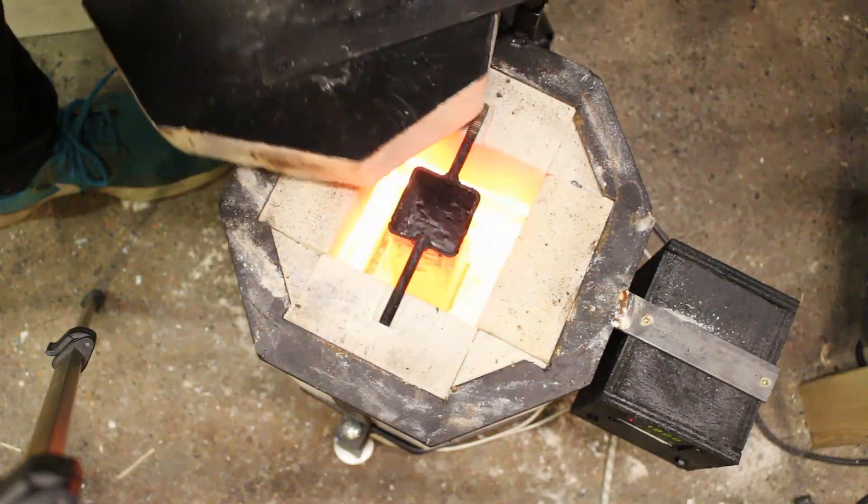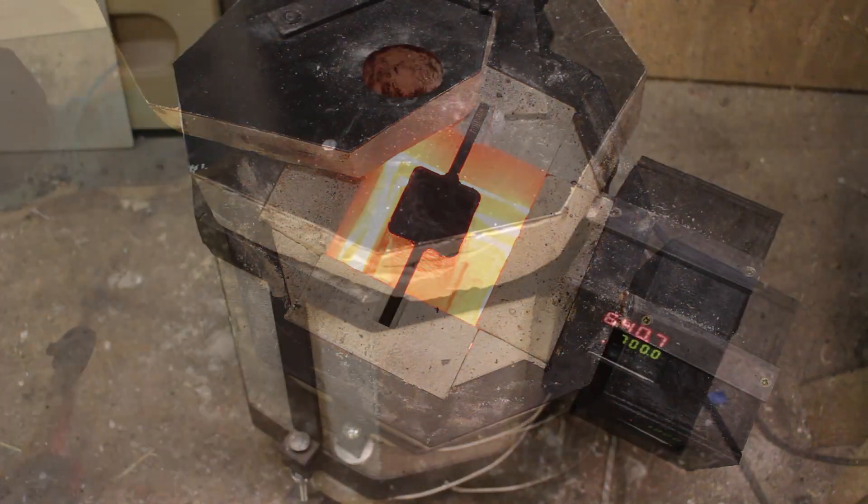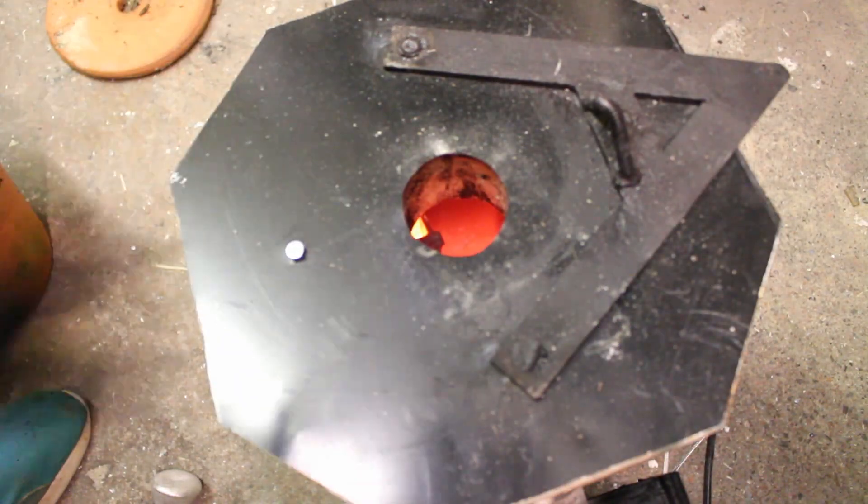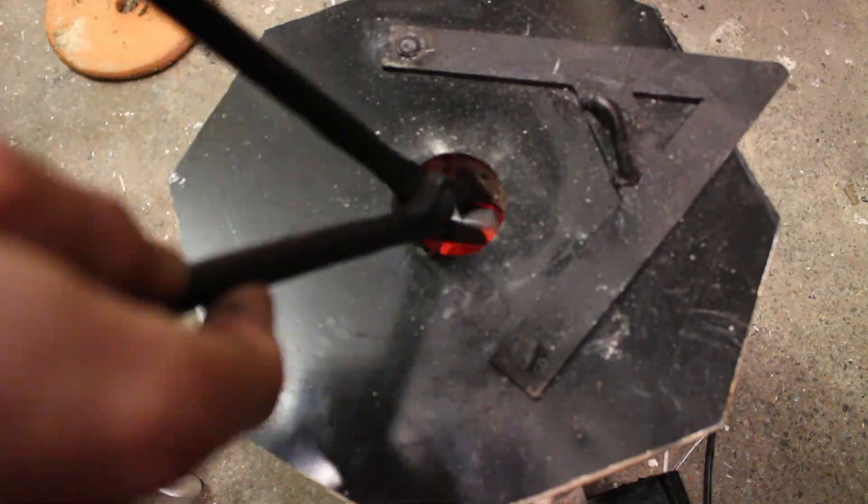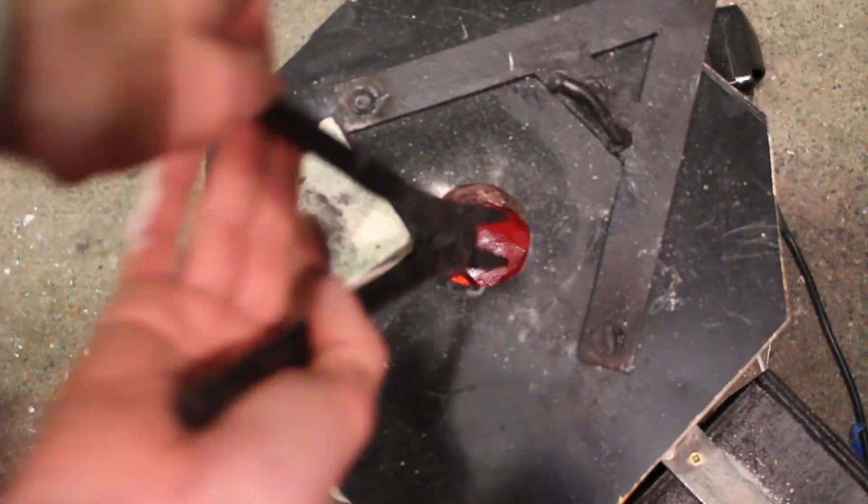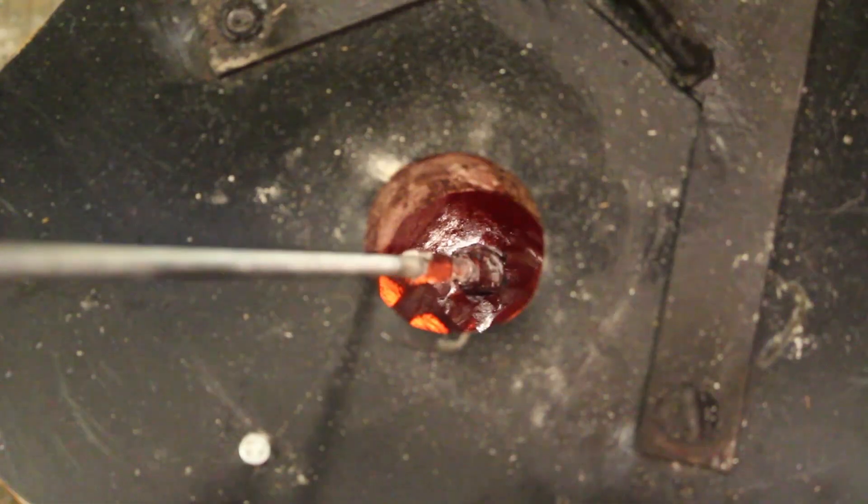I heated up my electric foundry again but this time it had my steel crucible inside. I then put in some ingots of solid aluminum that I know are pure since I've cast them in the past. They melt down pretty quickly and then I can use a stainless steel threaded rod to remove some of the dross and oxide floating on the surface.